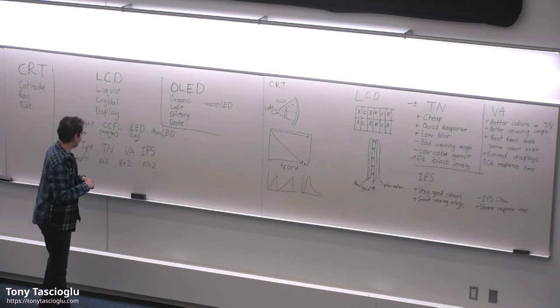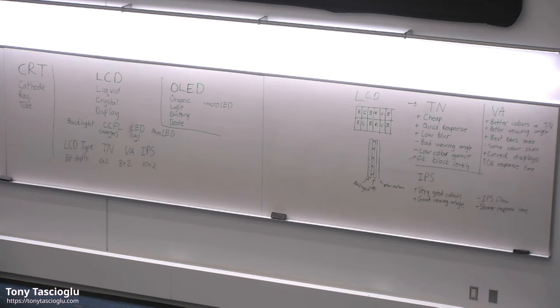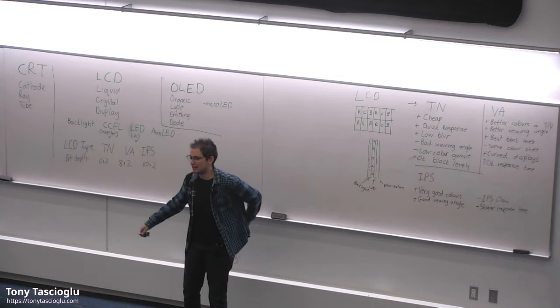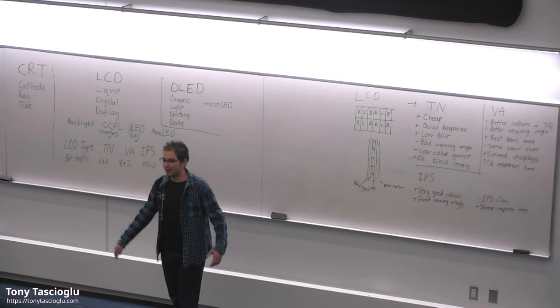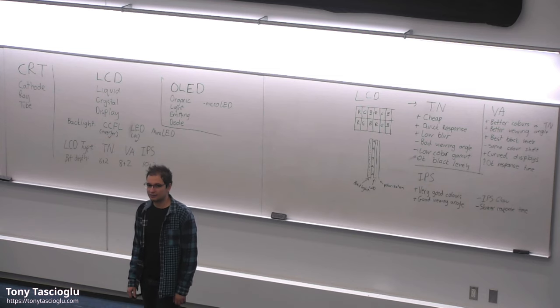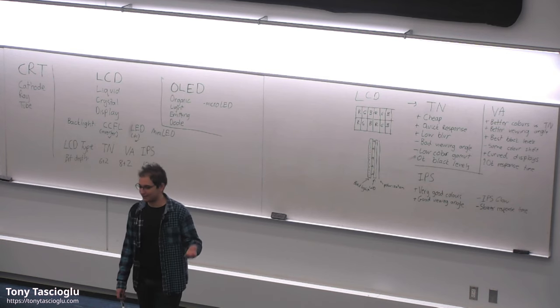On to the discussion of OLEDs and self-emissive panels. Finally, I think we can move on to the last type of display, which is OLEDs. Oh, I should mention, there's a lot of IPS-like variants. HWVA, even though it has VA in the name, is actually an IPS panel, Hyper-Wide Viewing Angle. Samsung used to call it PLS, plane-to-line switching, but it's actually the same thing.